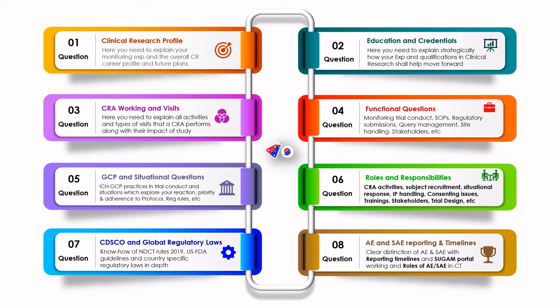A CRA with a high level of ethics will clearly ask the site to report adverse events and medical history, so that whenever drug efficacy or drug safety is analyzed by the medical team, they have a clear idea of what kind of molecule they are dealing with and its effects. These are the eight fundamental questions asked in a clinical research associate interview — and once you go through these points, you understand what kind of questions you might face.